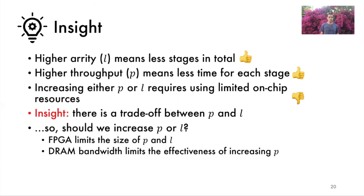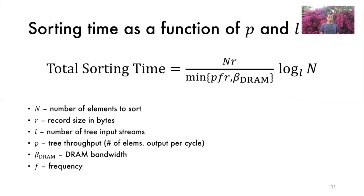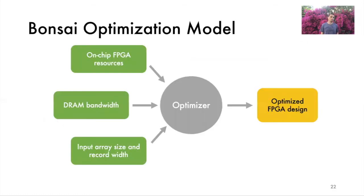Different FPGA and DRAM configurations have different optimal P and L values. There are two reasons for this. First, as mentioned, the specific FPGA we use will limit how big P and L can be. And second, it's not worth increasing tree throughput P beyond the DRAM bandwidth. Therefore, we want to first increase tree throughput to match the bandwidth of DRAM and then increase the tree arity as much as possible. The sorting time is equal to the time it takes to finish one stage multiplied by the total number of stages. The part in green is the total number of stages, and the part in blue is the time to execute a single stage. It is equal to the number of bytes in the array divided by the throughput of the merging stage. This throughput is equal to the minimum of the throughput of the merge tree and the DRAM bandwidth. In summary, the optimizer takes the available FPGA resources, DRAM bandwidth, and input array size and record width as inputs, and outputs the optimized merge tree design. Formally, the optimizer solves a constraint optimization problem.